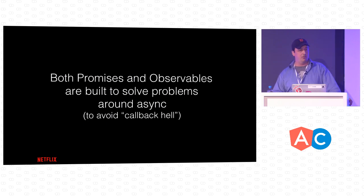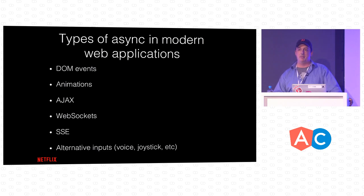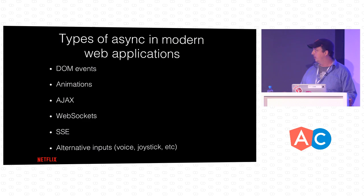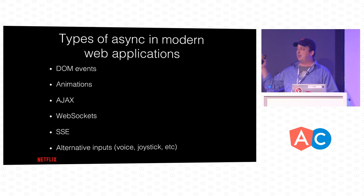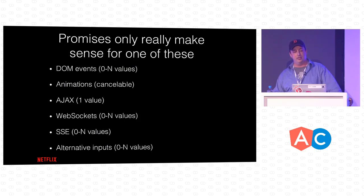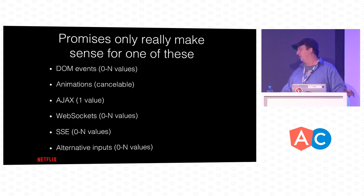Both observables and promises were built to solve problems around asynchrony — to avoid callback hell. Async in modern web applications boils down to DOM events, animations, AJAX, WebSockets, server-sent events, and other inputs like joystick and audio. Which of these are promises really good for? DOM events are more than one value, animations are cancelable, WebSockets and server-sent events are all more than one value. Really, the only thing promises make sense for in this entire list is AJAX — except for when promises don't make sense for AJAX.